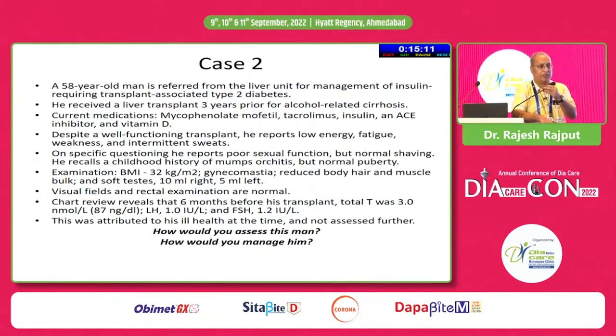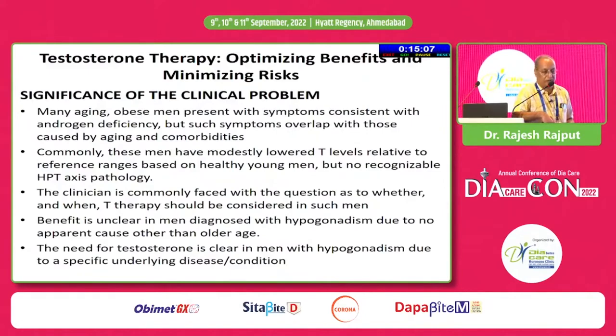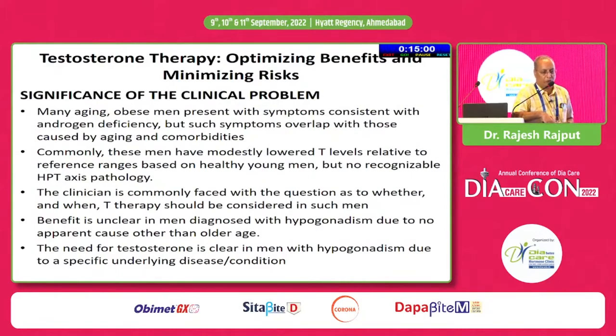These are real-world cases which I felt we should share and then discuss. Now, why is this topic significant? Many aging and obese men present with signs and symptoms of androgen deficiency, which are actually also caused by aging per se. So there is confusion about whether symptoms are due to testosterone deficiency or simply part of the normal aging process.